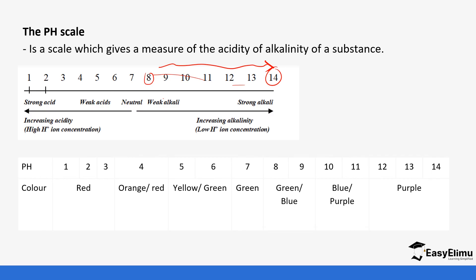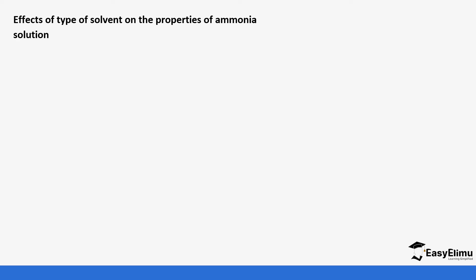The more alkaline a substance is, the deeper the color. From pH 8 you see a green-blue color, moving to purple as you go toward pH 14 — the color deepens as alkalinity increases. Next, we look at the effects of solvent on a substance. For acids we looked at the effects of hydrogen chloride gas in methylbenzene and water; now we are going to look at ammonia.